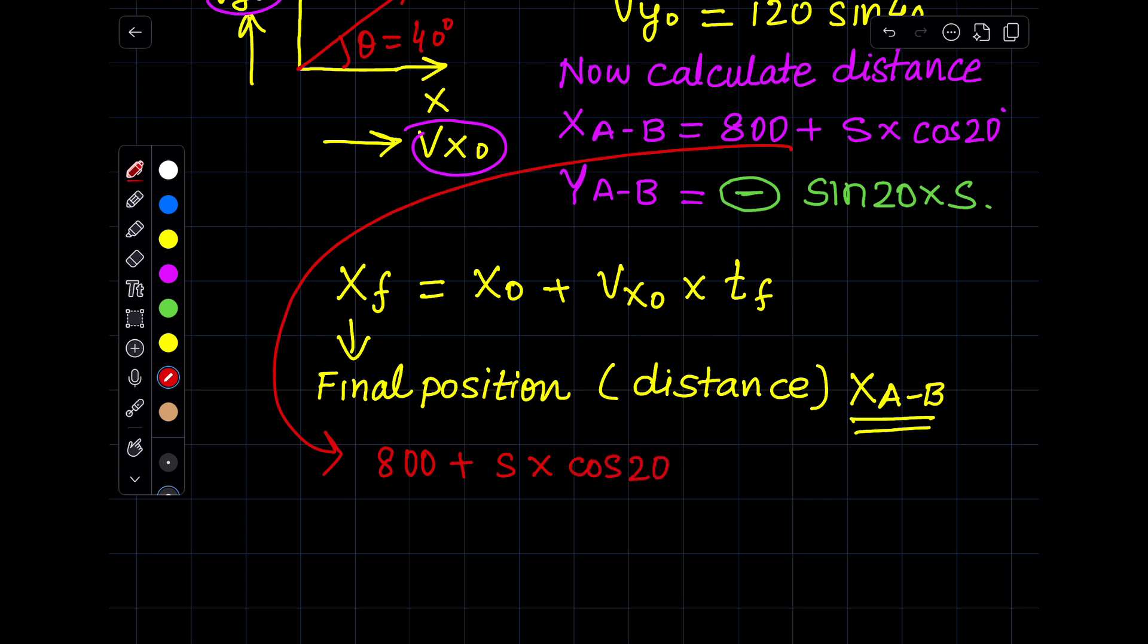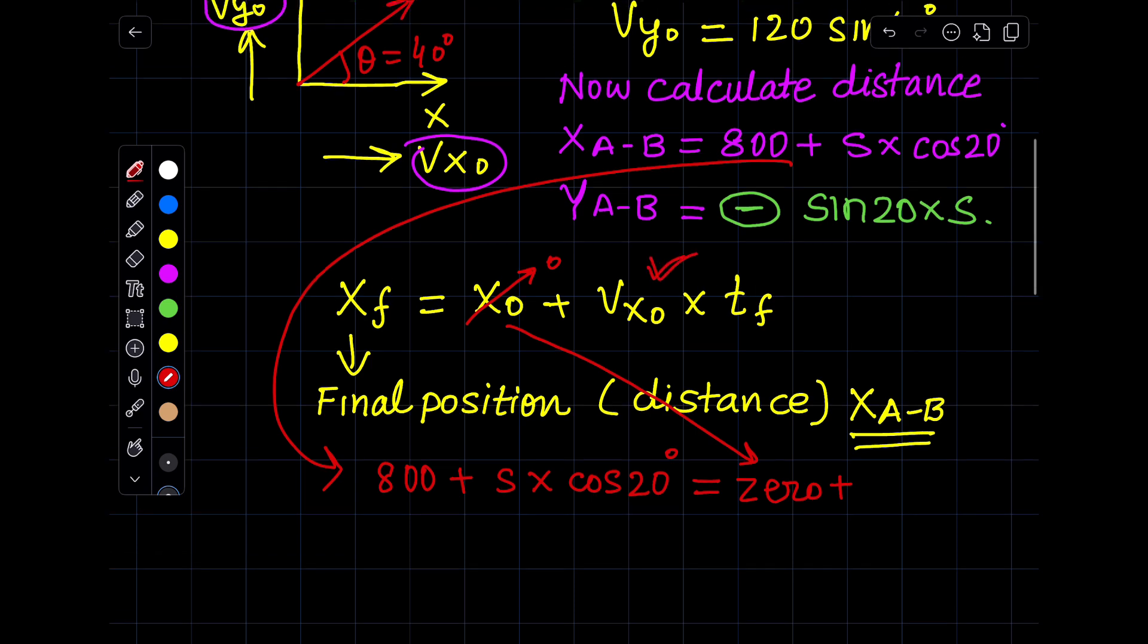After that we have to write X₀. What is X₀? The initial distance from the origin point is 0 for us, so we will write it is 0 plus the initial velocity in X direction.